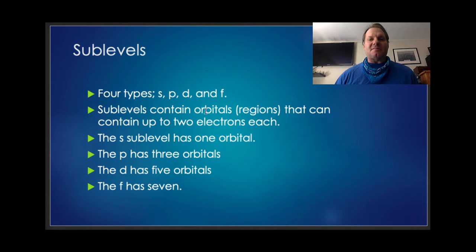Now the sub-levels themselves contain orbitals which are regions that can hold up to two electrons each. They're like little rooms that can hold electrons. So the S sub-level has one orbital. Thus it can hold two electrons. The P has three different orbitals. Two in each makes six electrons in a P. A D has five orbitals so it can hold up to ten electrons. And the F has seven which means it can hold up to fourteen electrons.